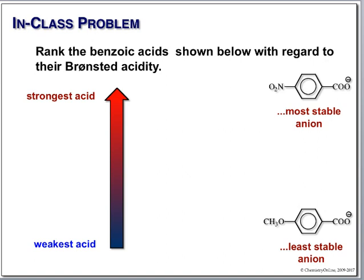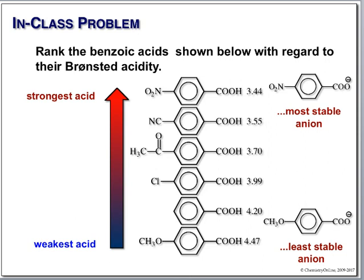Looking at our assortment: nitro is the strongest electron-withdrawing group, then nitrile, then carbonyl, then halogen, then benzoic acid itself. All of these are electron withdrawing, with pKa values ranging from about 3.4 up to about 4.5. Activating groups pump electrons in, making these stronger acids; deactivating groups withdraw electrons, making these weaker acids. It's all about the anion.